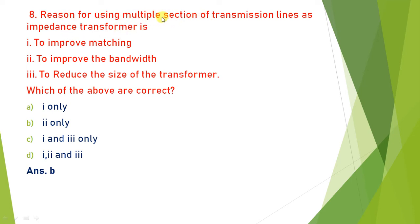Next: the reason for using a multi-section transformer as an impedance transformer is what? As discussed, as the number of sections increases, the bandwidth increases — that is, bandwidth improves. This is the only reason we use a multi-section transformer, satisfied by option 2. So the answer is (b): we use multi-section transmission line as an impedance transformer to improve fractional bandwidth.